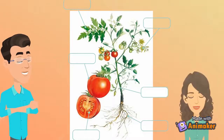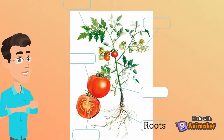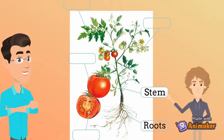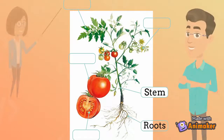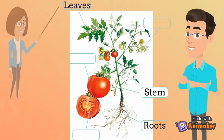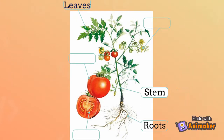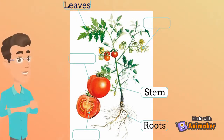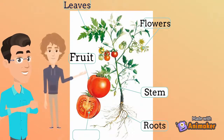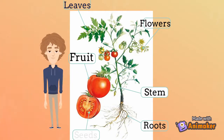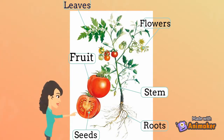These are the roots. This is the stem. These are the leaves. These are the flowers. This is the fruit. These are the seeds.